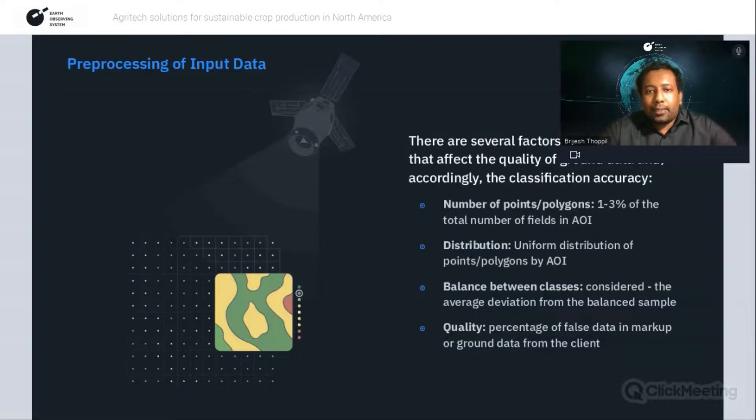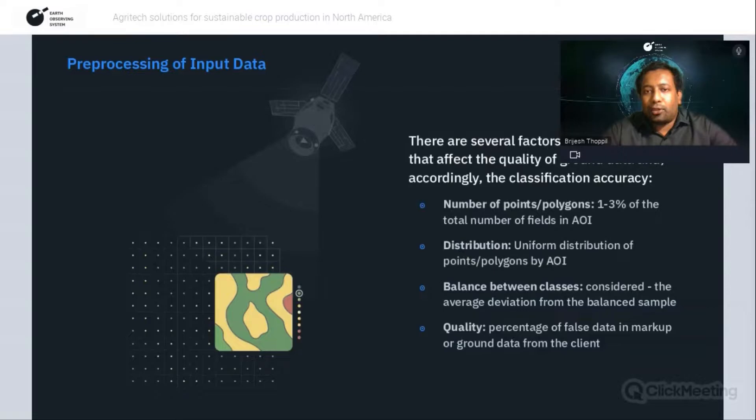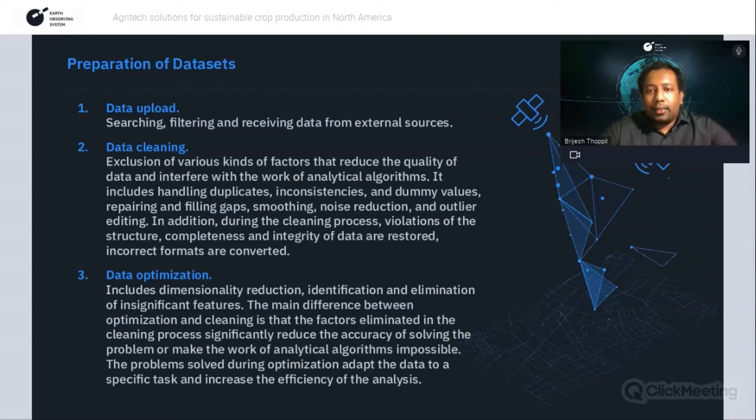The second step is pre-qualification of the ground truth data, where we determine the distribution of farms and the number of field points available. The third step involves preparation of datasets — with three sub-steps: data upload, data cleaning, and data optimization. Data is uploaded to our neural network scheme model through searching, filtering, and receiving data from external sources.